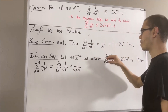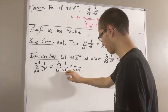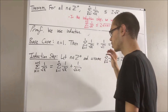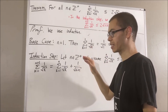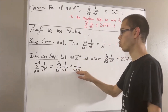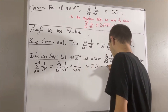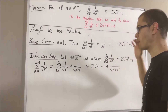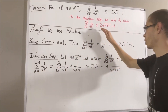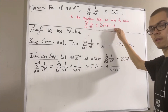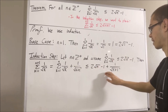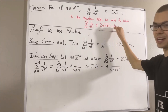Then, by our induction hypothesis, we know that the sum from k equals 1 to n of 1 over the square root of k is less than or equal to 2 square root of n minus 1. So this entire thing must be less than or equal to 2 square root of n minus 1 plus 1 over the square root of n plus 1. The whole goal is to make this less than or equal to 2 square root of n plus 1 minus 1.